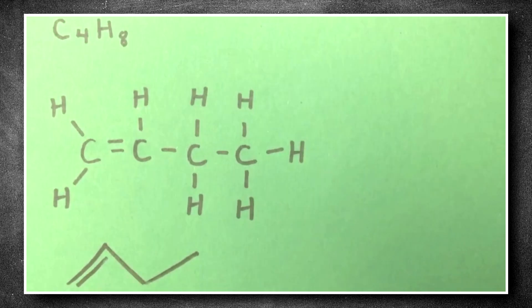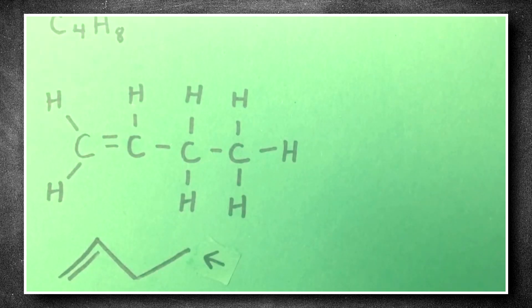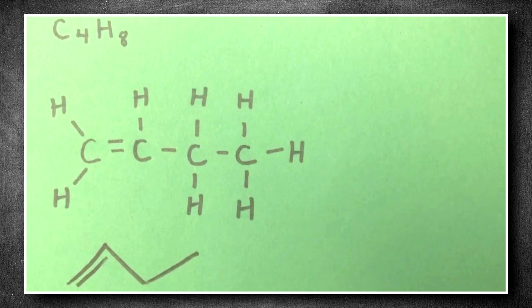Looks a lot simpler, right? Each vertex or angle is a carbon atom. Single lines are single bonds between carbons. And the double line? You guessed it. A double bond.